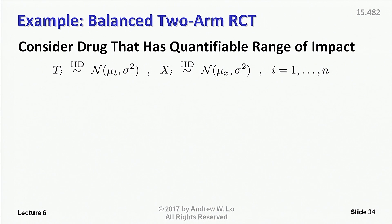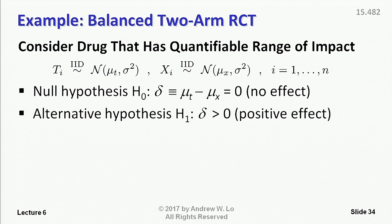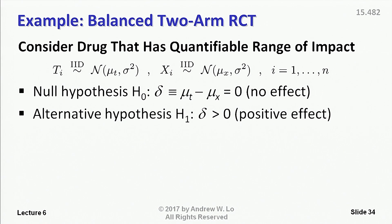We just want to know: are they different? For concreteness, let's suppose that whatever we're measuring is a good thing, so we want it to be as big as possible. We want the treatment group to show a bigger number than the control group — that's just a normalization for the sake of argument. So the null hypothesis, the base case scenario, is there's no effect — the drug does not work. The alternative hypothesis is that the drug works; there's a positive effect. That's what we're trying to determine.